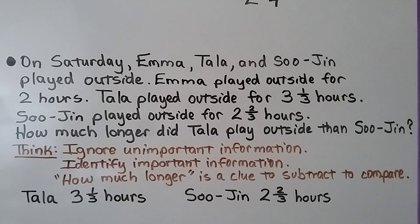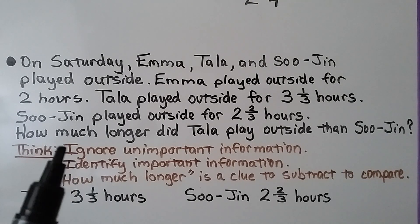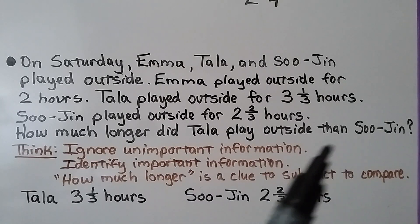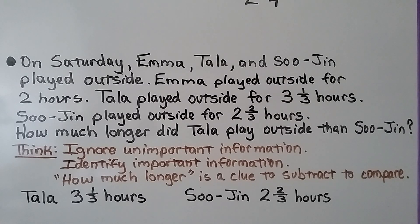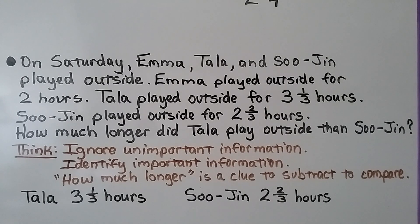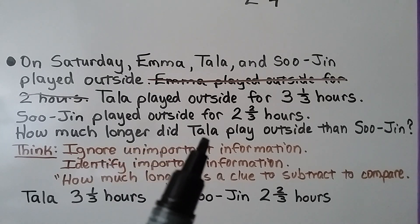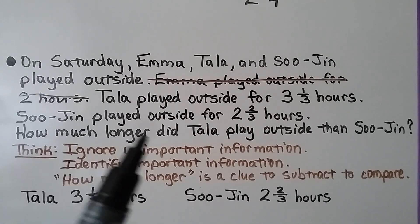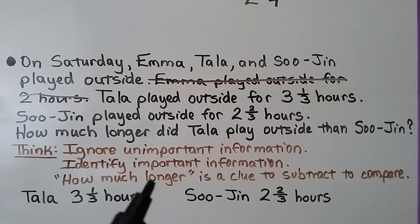We need to ignore the unimportant information. Looking at the question, it asks how much longer did Tala play outside than Soo Jin — it's not asking about Emma at all. So the fact that Emma played outside for 2 hours is unimportant. We identify the important information: 'how much longer' is a clue to subtract to compare.